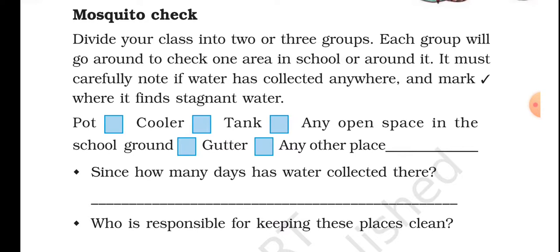There is an activity where you make groups of two or three students. Each group will go around to check one area in school or around it. As nowadays schools are closed, you will have to go around and check one area nearby your house where you can find mosquitoes.